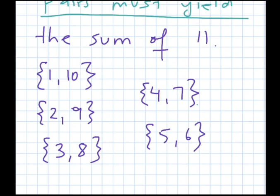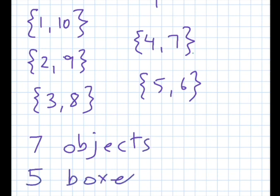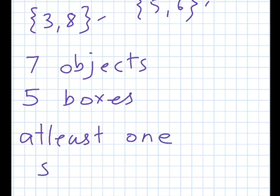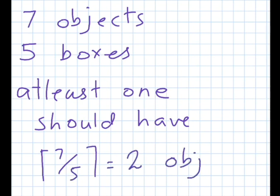These are the pairs out of 1 to 10 for which we have the sum of 11. Now, how many numbers do we have to choose? We have to choose 7 numbers — these are our objects. And we have 5 boxes, where each box corresponds to one of the pairs.